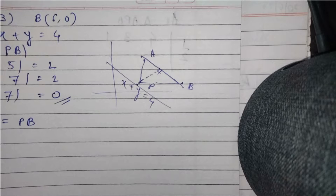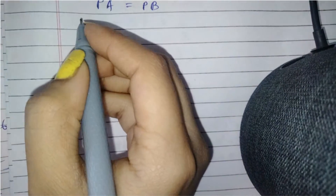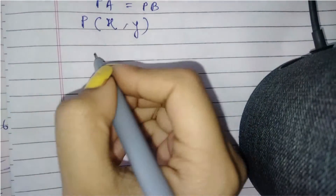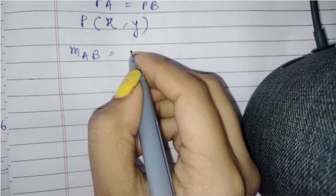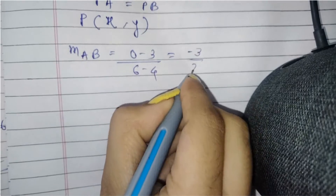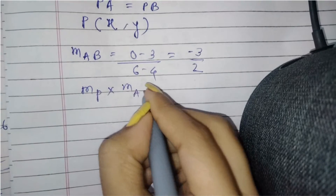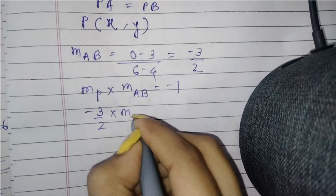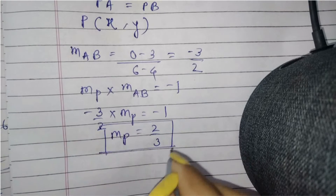We have to find the equation of the perpendicular bisector of AB. Let us suppose that point P is (x, y). Finding the slope of AB: the points A and B are given, so slope equals (y2 - y1)/(x2 - x1) = (0 - 3)/(6 - 4) = -3/2.